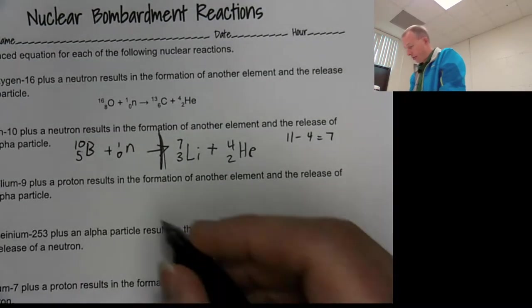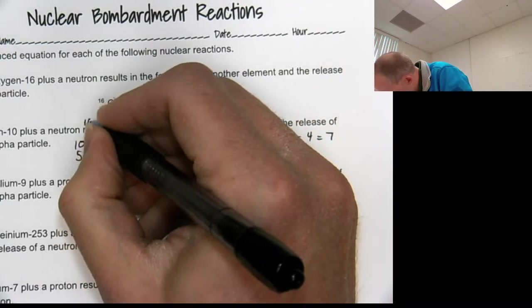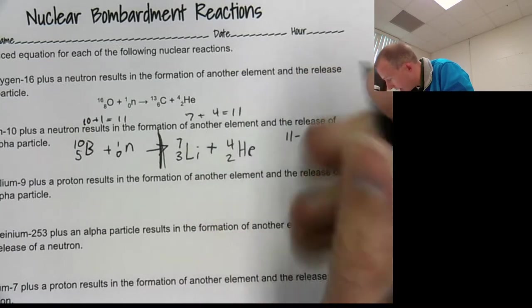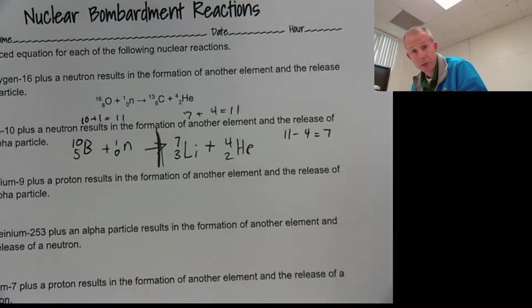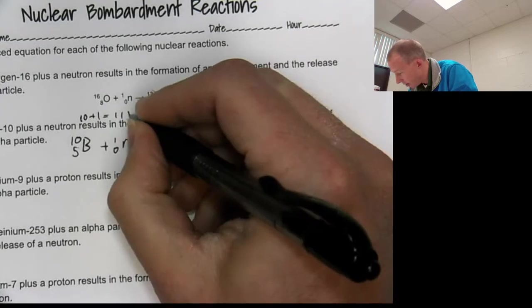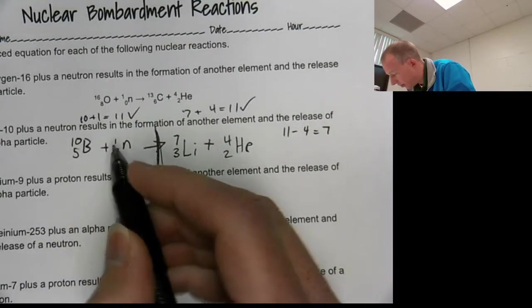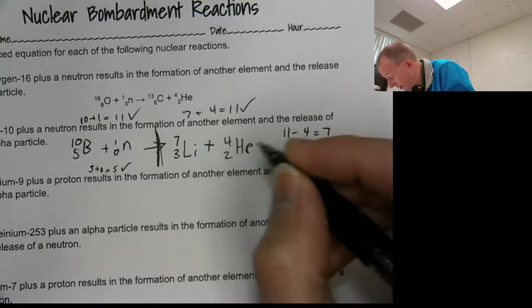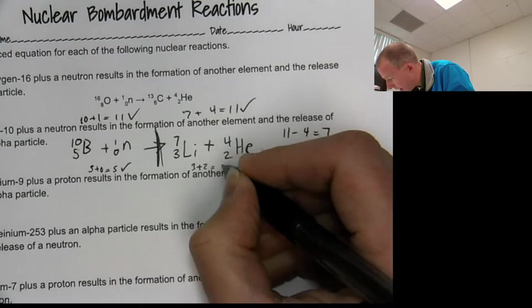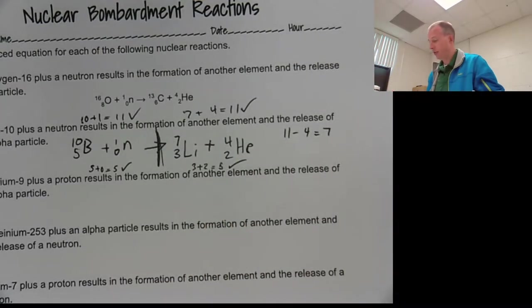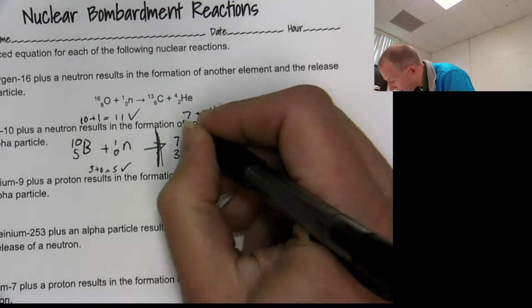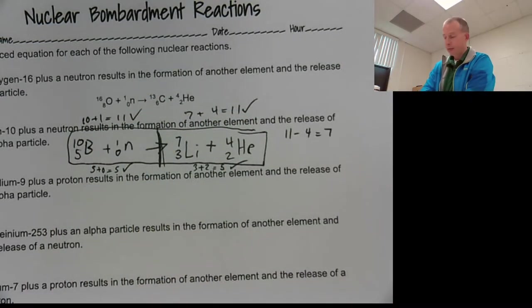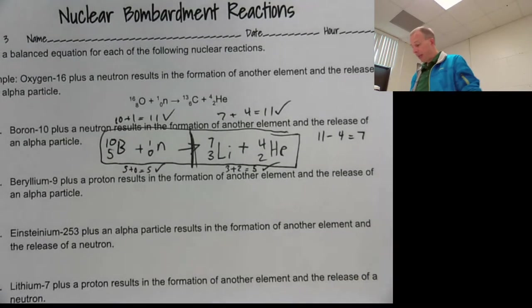Now to check. Check and see. So 10 plus one, that equals 11. Seven plus four, that equals 11. So your top things, those add up. You're good. Congratulations. Your bottom five plus zero equals five. I'm just writing this out to be really specific and show you three plus two equals five. Congratulations. You've done this. So your answer is this deal here.